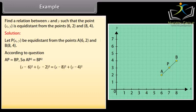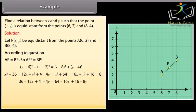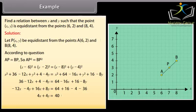x minus 6 whole square plus y minus 2 whole square equals x minus 8 whole square plus y minus 4 whole square. By calculating it, we get x square plus 36 minus 12x plus y square plus 4 minus 4y equals x square plus 64 minus 16x plus y square plus 16 minus 8y. Which is equal to 36 minus 12x plus 4y equals 64 minus 16x plus 16 minus 8y, which becomes minus 12x minus 4y plus 16x plus 8y equals 64 plus 16 minus 4 minus 36, equal to 4x plus 4y is equal to 40 which is equal to x plus y equals 10.